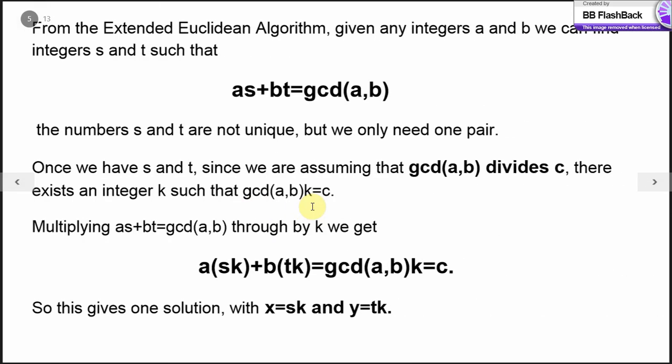How do we solve the equation? From the extended Euclidean algorithm, given any integers a and b, we can find integers s and t such that as plus bt equals gcd of a, b. The numbers s and t need not be unique, we only need one pair.